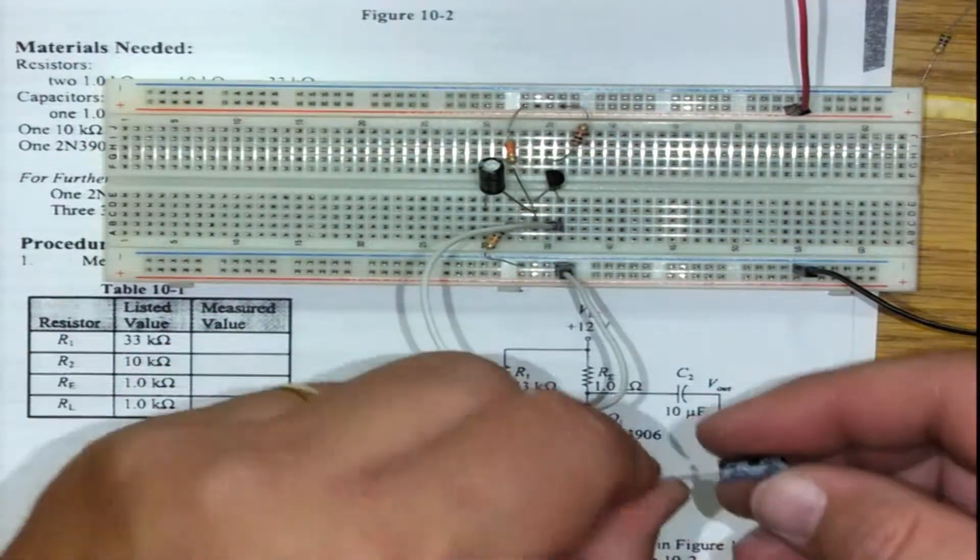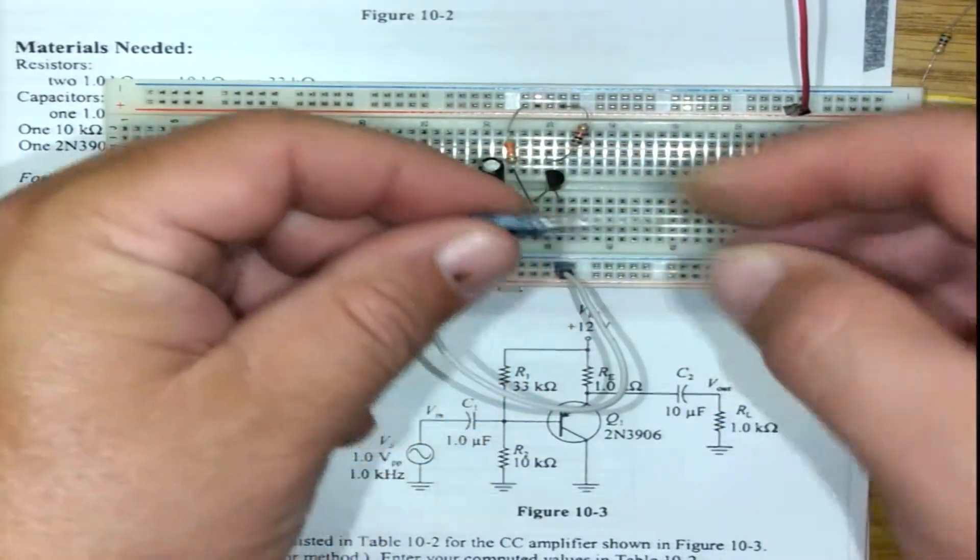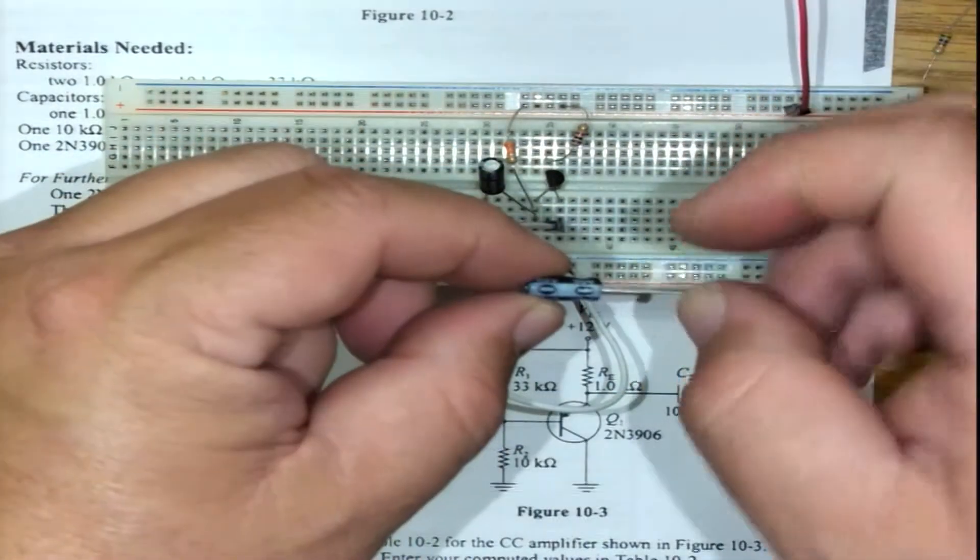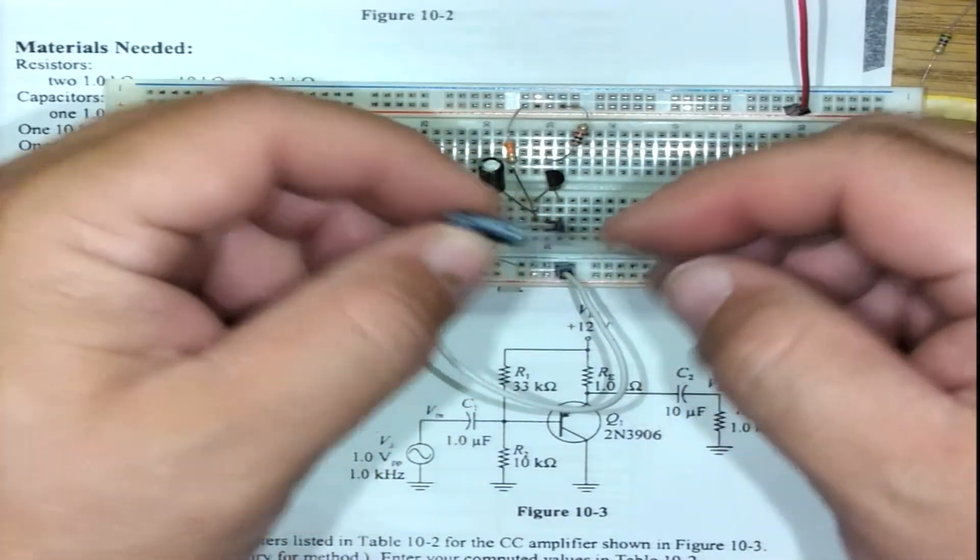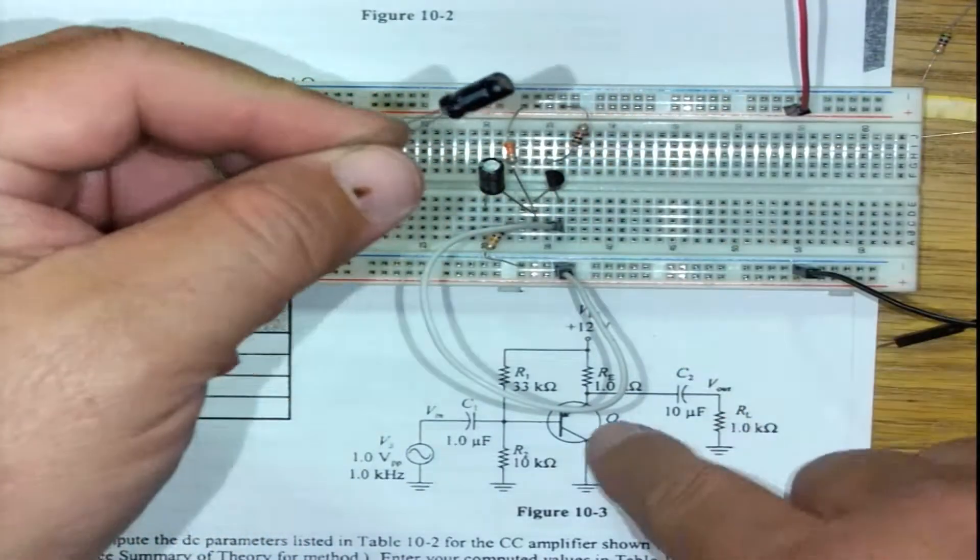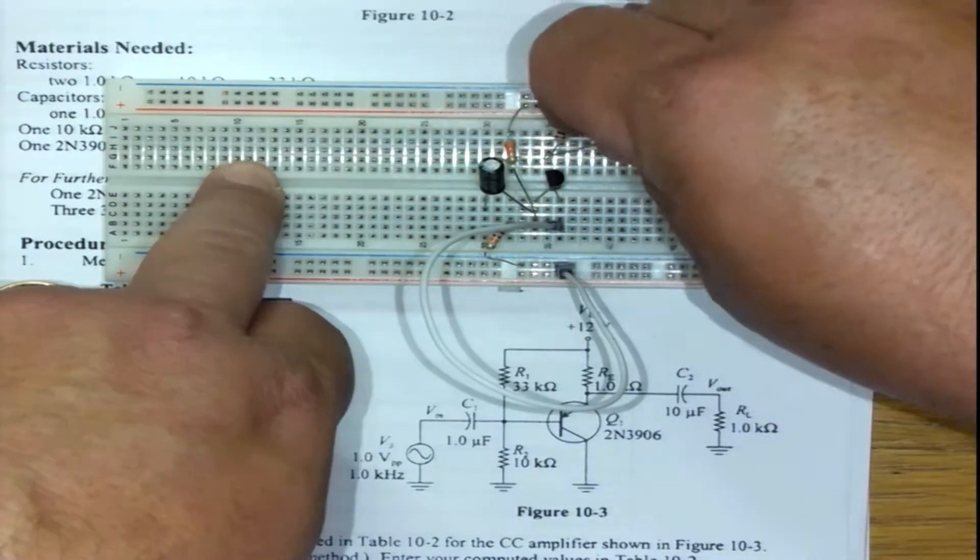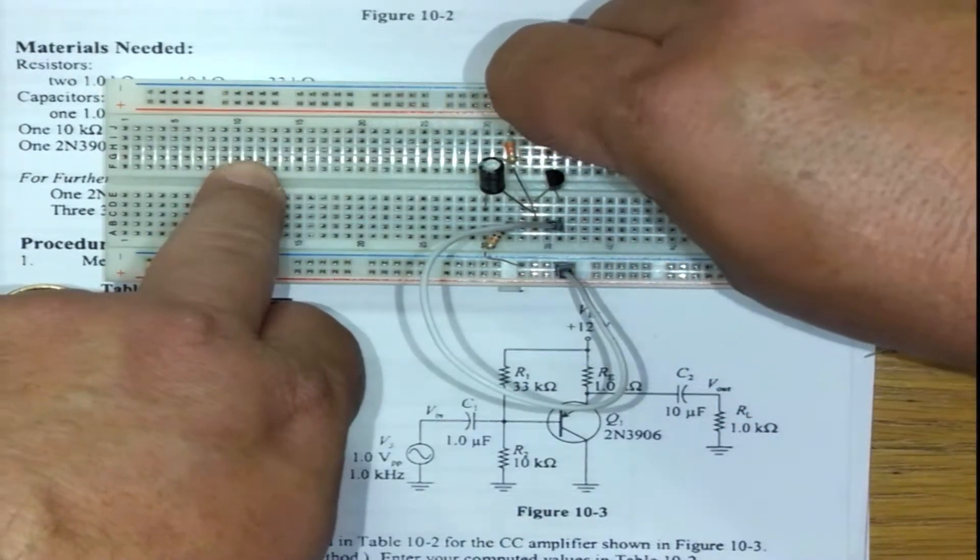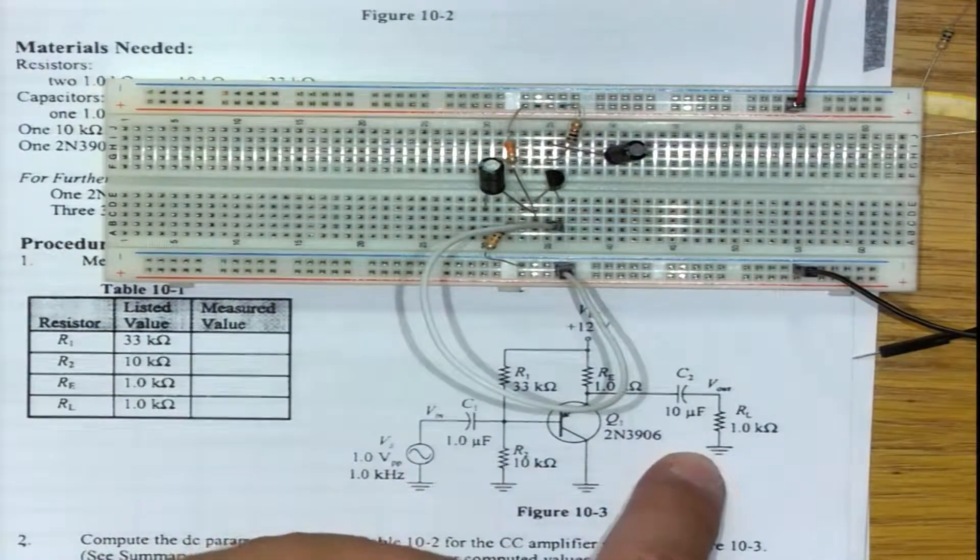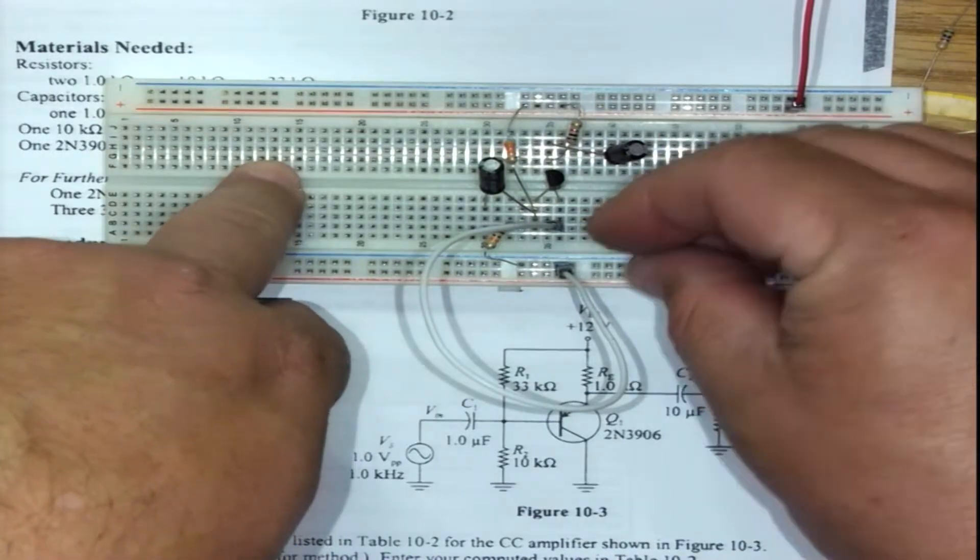Then we are left with a 10 microfarad capacitor. Check the orientation—negative is usually the short line, but if you have equal length, check the body orientation. Negative always goes to the load, positive comes to my active part of the circuit. In this case, it goes to the emitter and should go to somewhere in an open space on the breadboard like such.